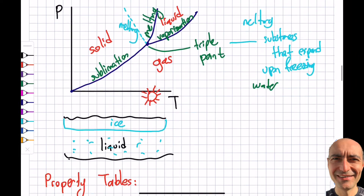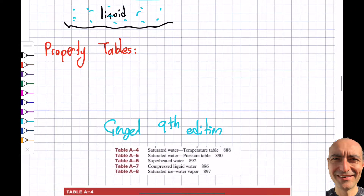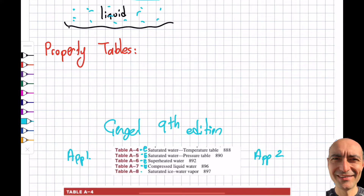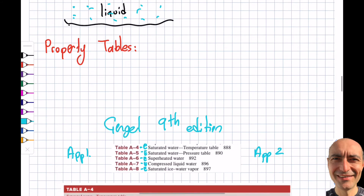Table A4 is in Appendix 1 for SI units, and Appendix 2 contains the same tables with an 'E' at the end for English (British gravitational) units. You may want to look at those as well.